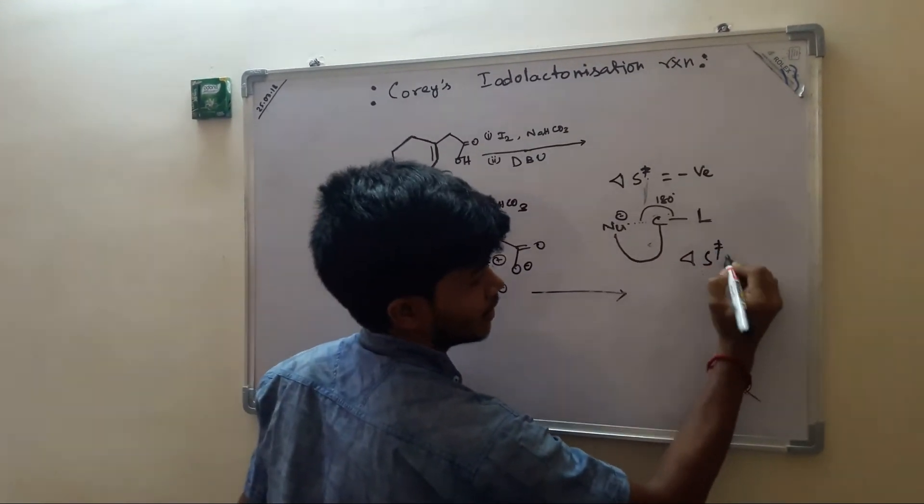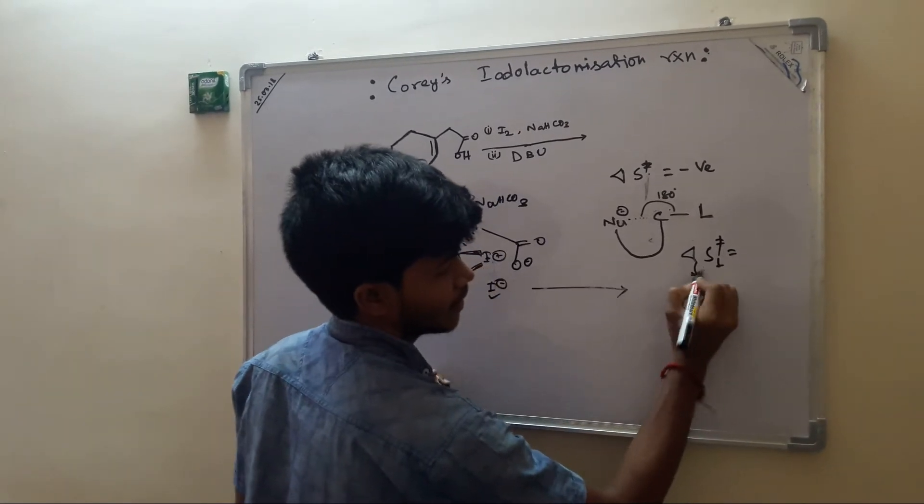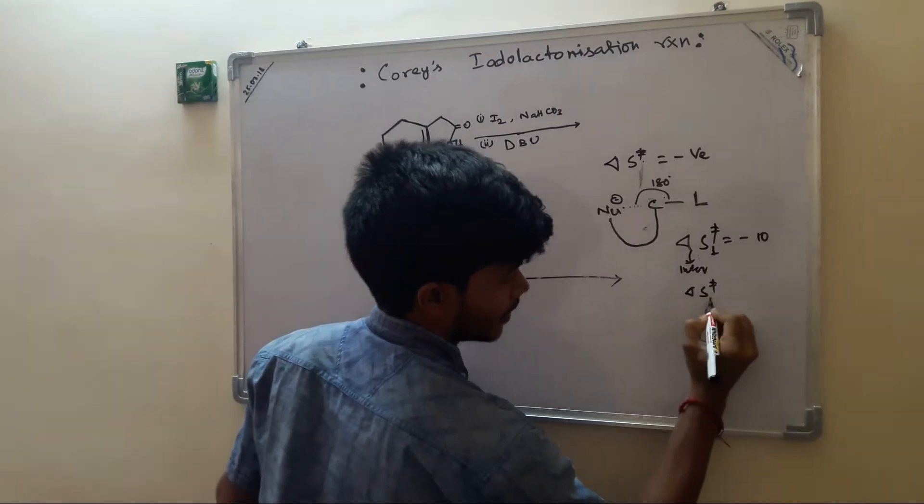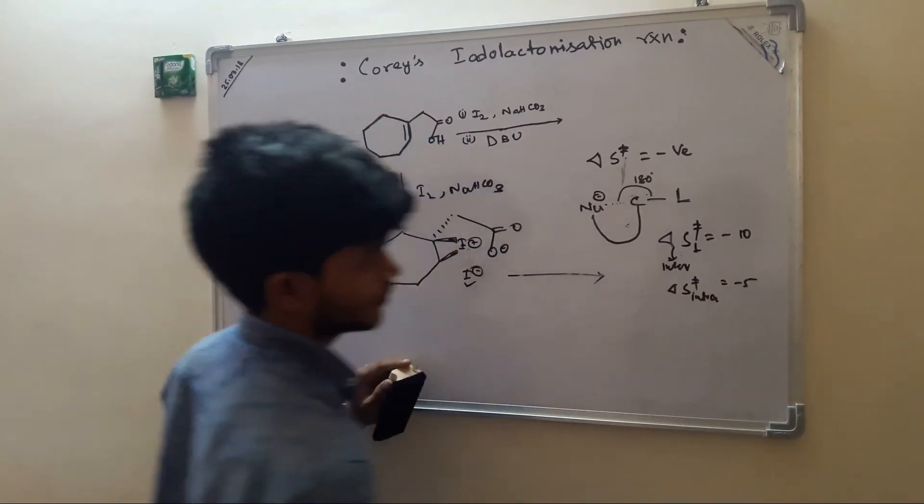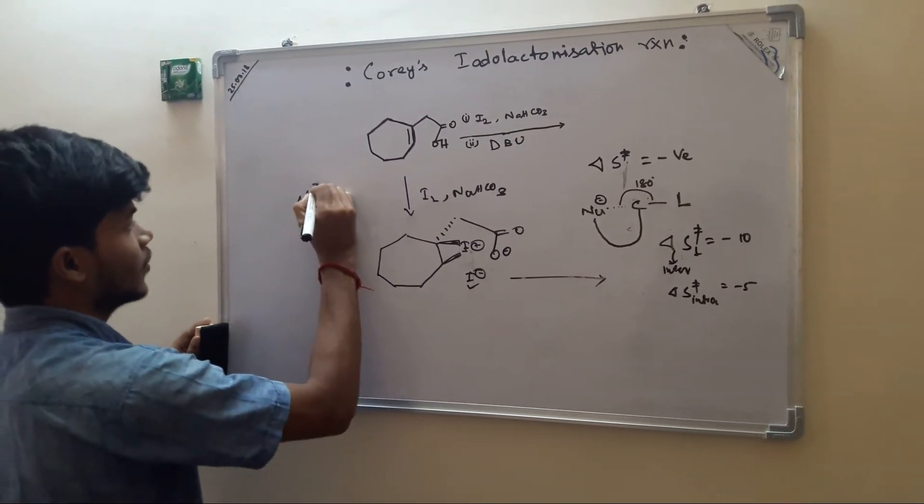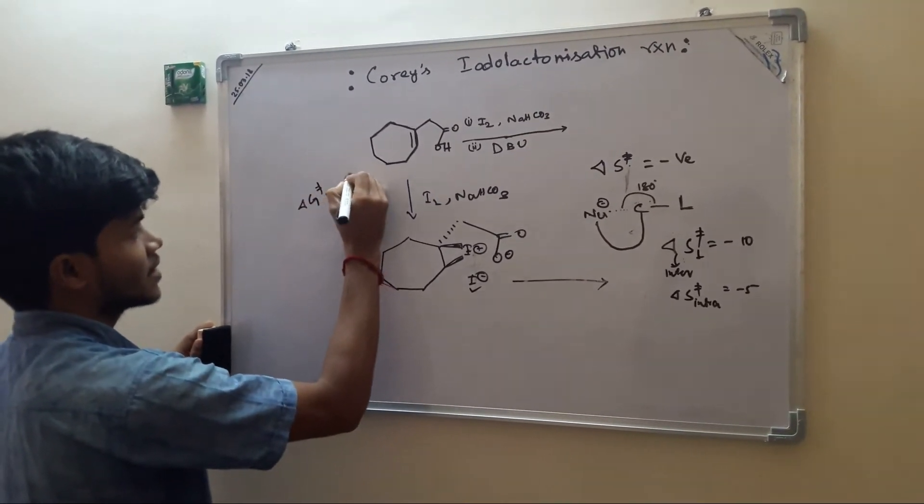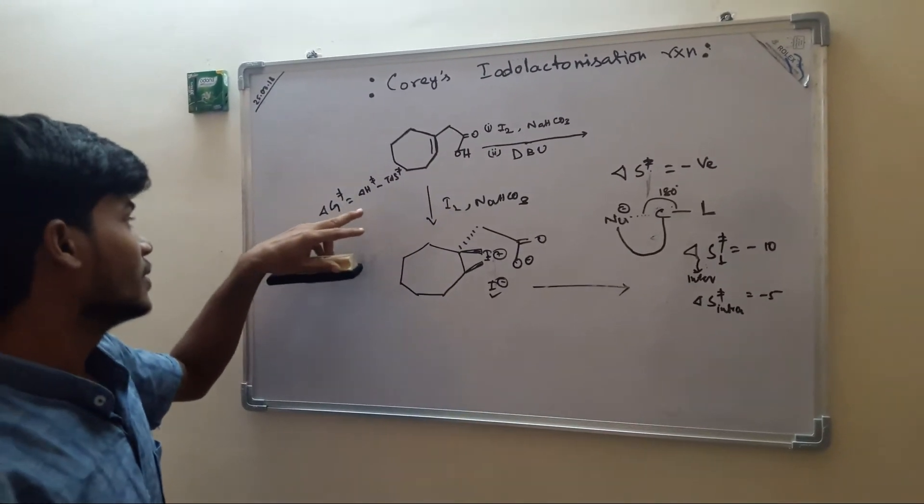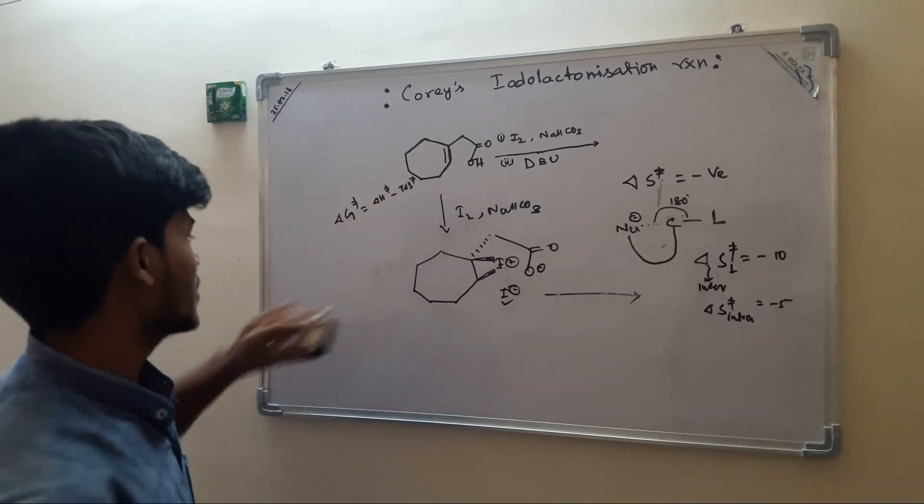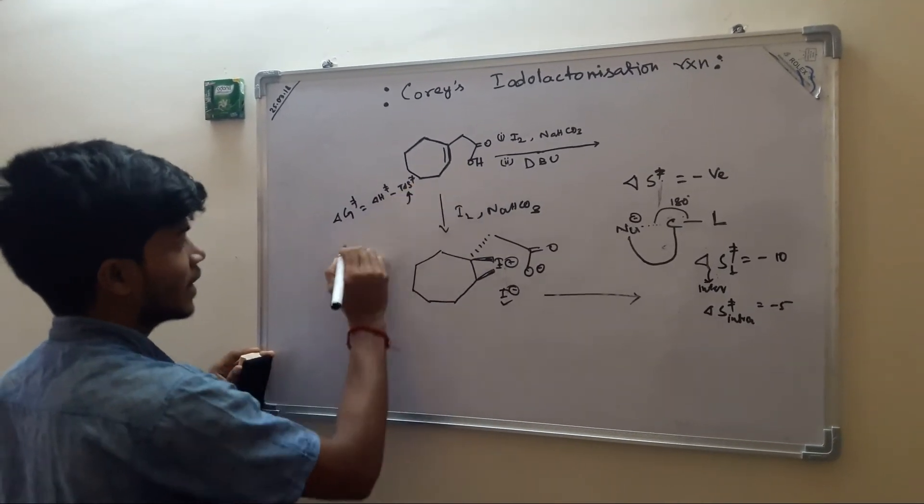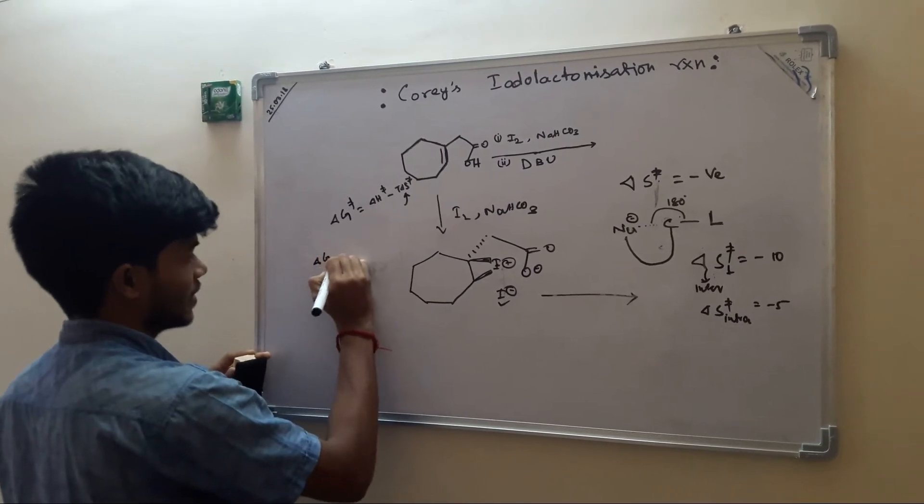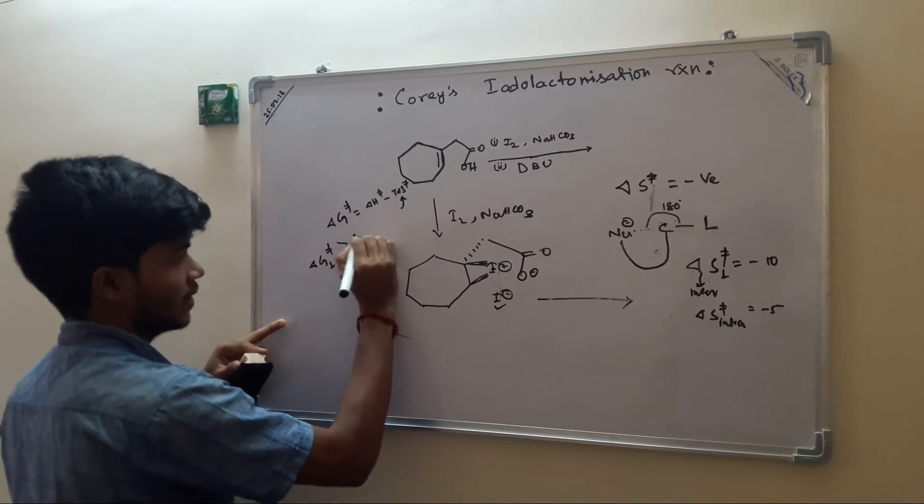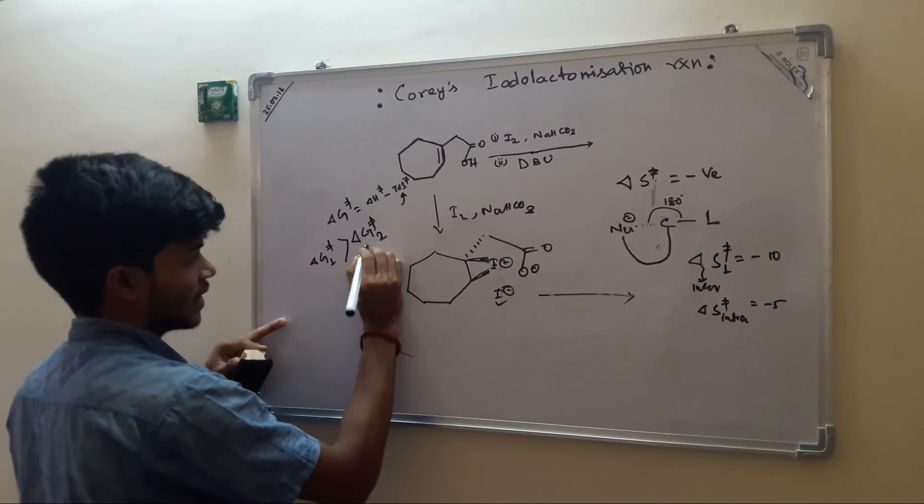Delta S double dagger for inter, say minus 10, for intra, say minus 5. As we all know, Delta G double dagger equals Delta H double dagger minus T Delta S double dagger. That is the free energy of activation. Now if it has more negative value, then Delta G for intermolecular reaction should be greater than intramolecular reaction.